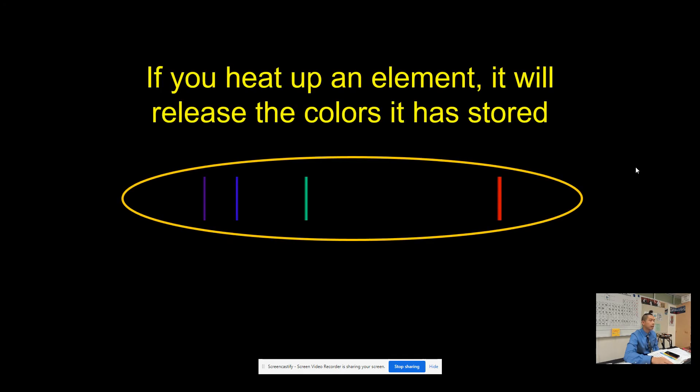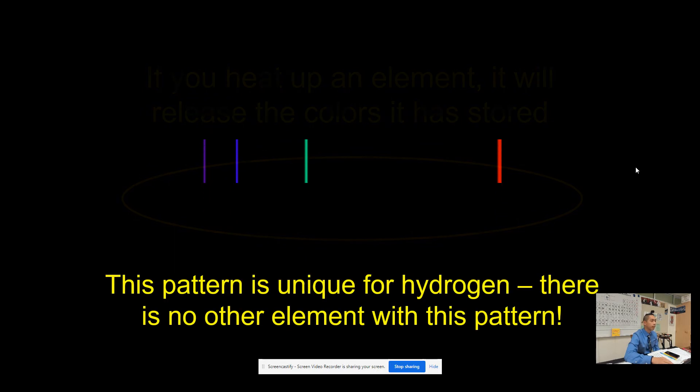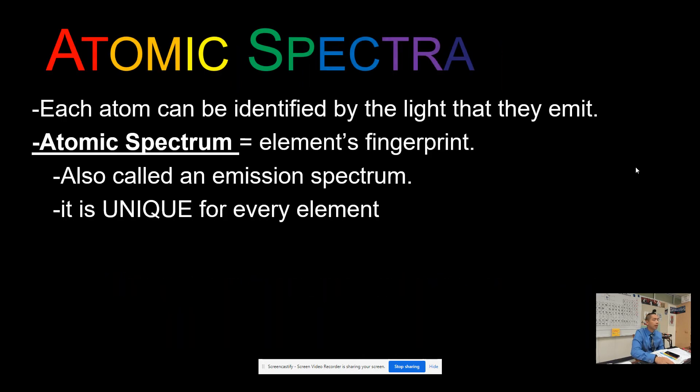If you heat up that element, it's going to release the very same colors it has absorbed. This pattern is unique for hydrogen - there is no other element with this pattern of light. That's what the atomic spectra, or atomic spectrum, is.